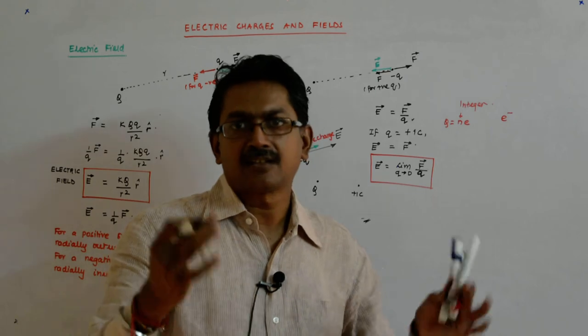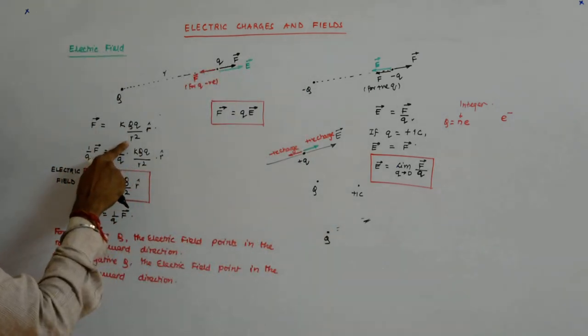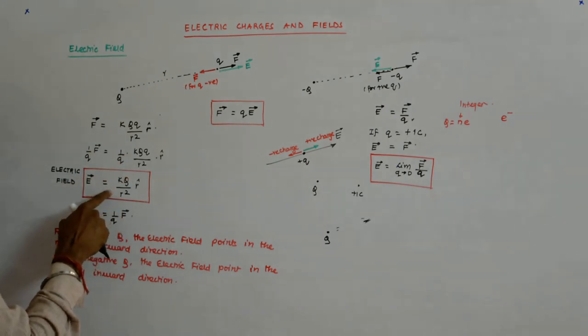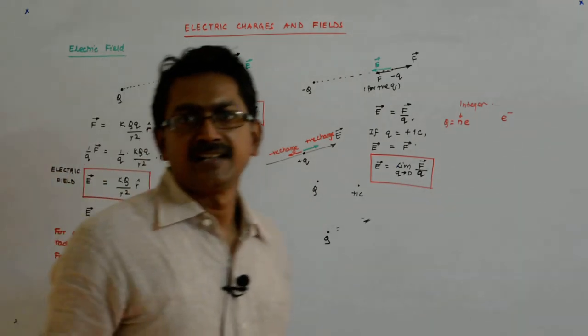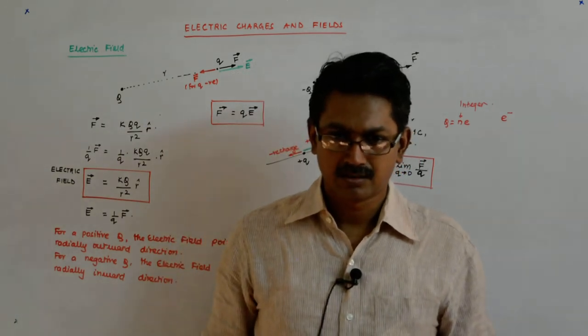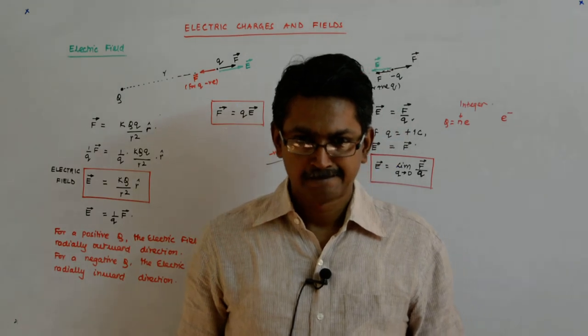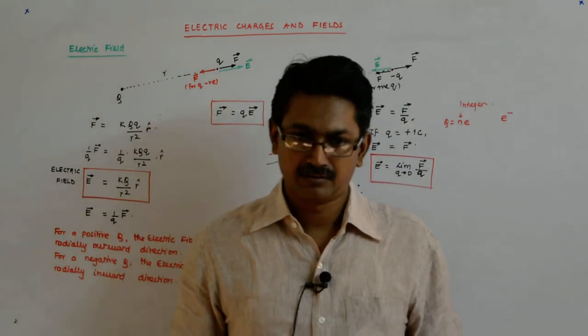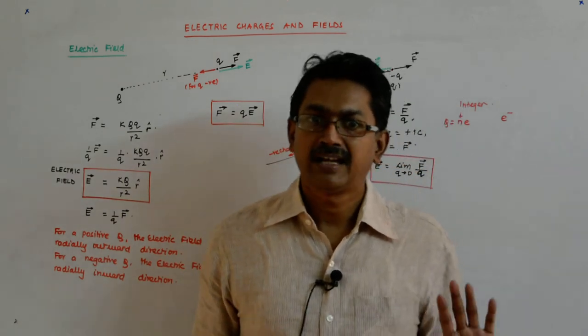Why? Because farther you go from the source, lesser does this electric field become. It will become zero only at infinity. So it's everywhere.